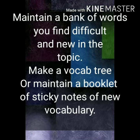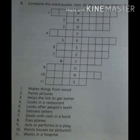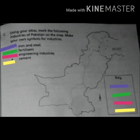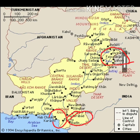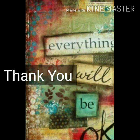Now for activities and things to do: maintain a bank of words you find difficult and new in the topic, and make a vocabulary list. You will complete the book work, part A and part B, with the help of these answers. You will also complete the puzzle with the help of these spellings, and then label the map. Make the key first: purple represents iron and steel industry, green represents fertilizers, red represents engineering industries, and yellow represents cement industries. Then mark these colors on the district map. Some cities are highlighted where engineering industry is found. In this way you will label the whole map. Thank you so much for watching this video. Allah Hafiz.